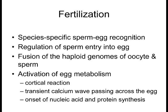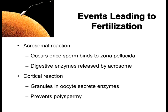Species-specific sperm-egg recognition comes down to the proteins on the sperm and on the egg. If they don't match, they will not join up with one another. They may touch, but they will not go through the next stages of fertilization. These molecular proteins on the surface of both sperm and egg prevent different species' sperm from fertilizing different species' eggs.